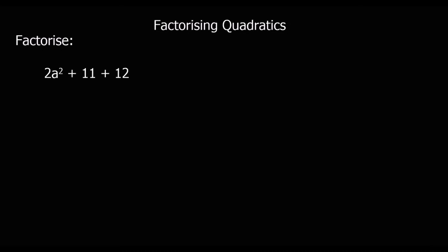Here we've got another factorised question, but in this case we've got a number before the x squared term. So this is the form ax squared plus bx plus c. Whenever we've got an a term, factorising requires a different process. They are possible to do by inspection or guessing, but it's easier when you're first doing it to follow a process. I'm going to show you a process for factorising when we've got a coefficient in front of the x squared. The first step is to take the a term and the c term and multiply them together.